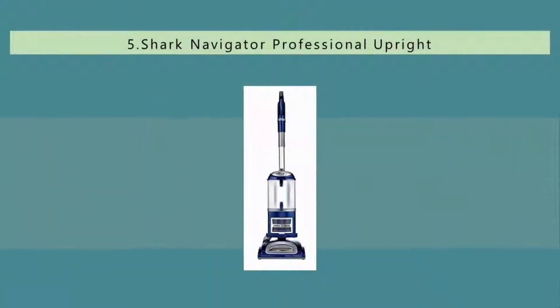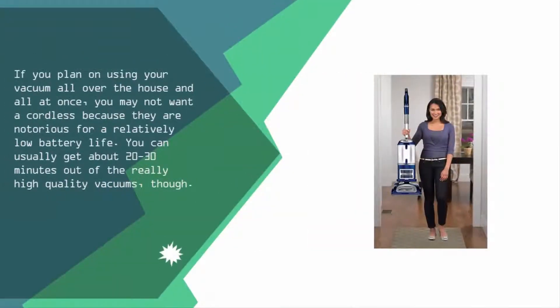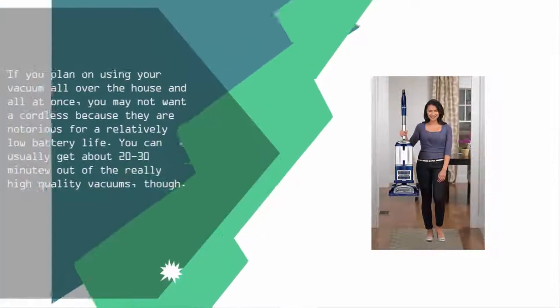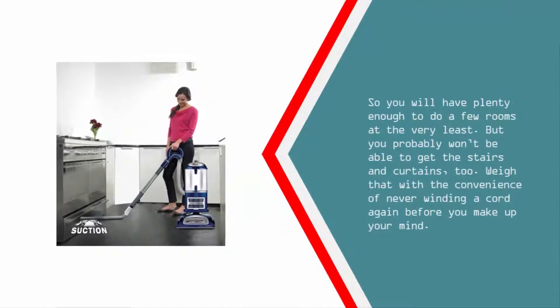Starting off our list at number five: if you plan on using your vacuum all over the house and all at once, you may not want a cordless because they are notorious for a relatively low battery life. You can usually get about 20 to 30 minutes out of the really high quality vacuums though.